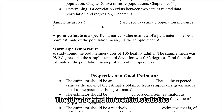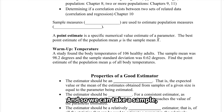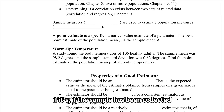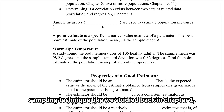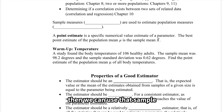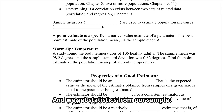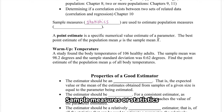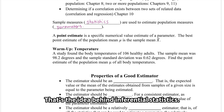The idea behind inferential statistics is that trying to survey an entire population is extremely difficult, if not impossible. So we can take a sample, and if it's a good sample — if the sample has been collected using a probability sampling technique, like we studied back in chapter 1 — then we can use that sample to draw conclusions about that population. We get statistics from our sample. Sample measures, or statistics, are used to estimate population measures, or parameters. That's the idea behind inferential statistics.